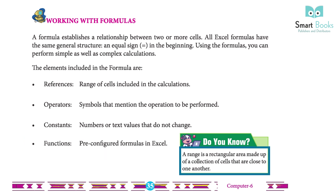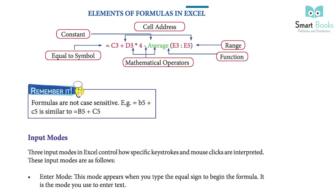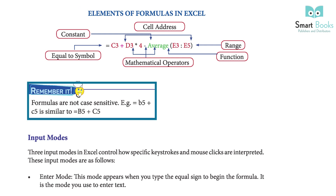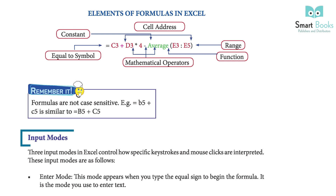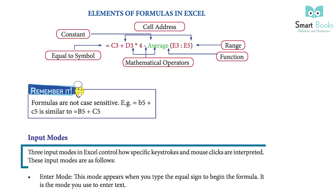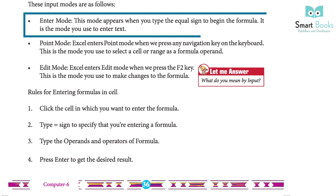A range is a rectangular area made up of a collection of cells close to one another. Remember: formulas are not case sensitive. For example, =B5+C5 is similar to =b5+c5. There are three input modes in Excel that control how specific keystrokes and mouse clicks are interpreted. Enter mode appears when you type the equal sign to begin the formula — it is the mode used to enter text.